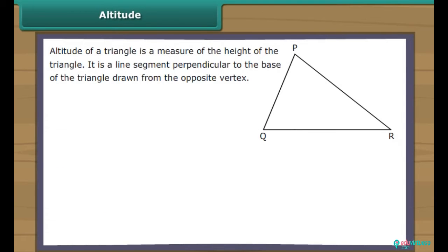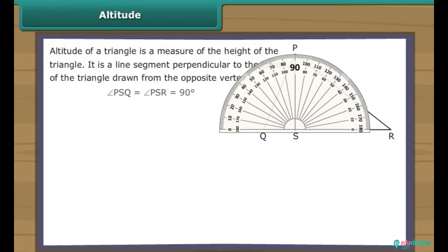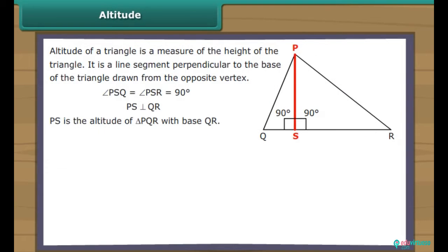Altitude of a triangle is a measure of the height of the triangle. It is a line segment perpendicular to the base of the triangle drawn from the opposite vertex. In the figure, line segment PS is a perpendicular drawn from vertex P to the base QR. It intersects QR at right angles. Therefore, PS is the altitude of triangle PQR with base QR.